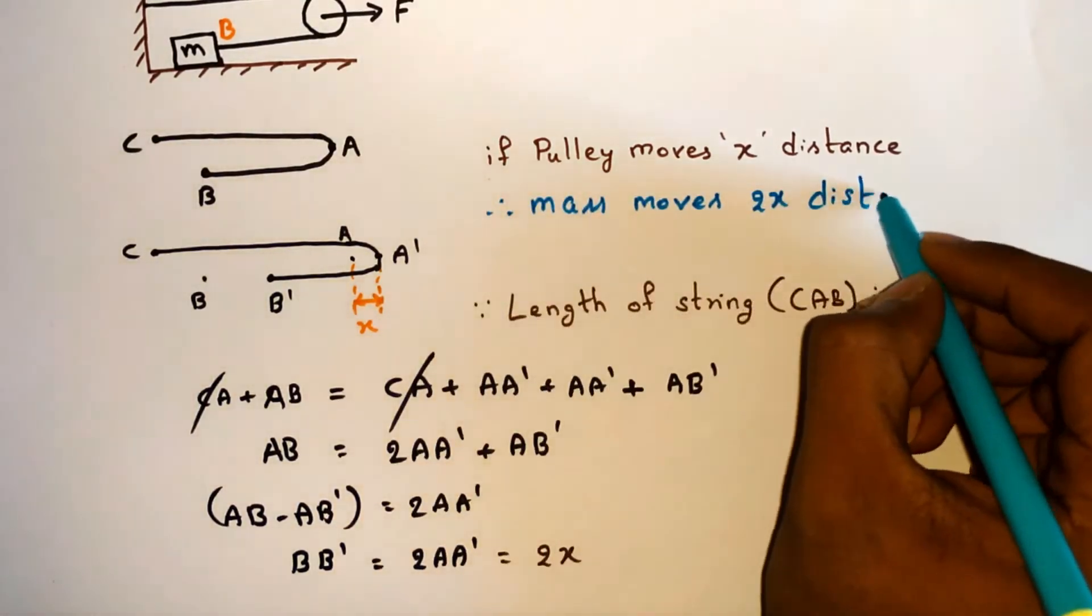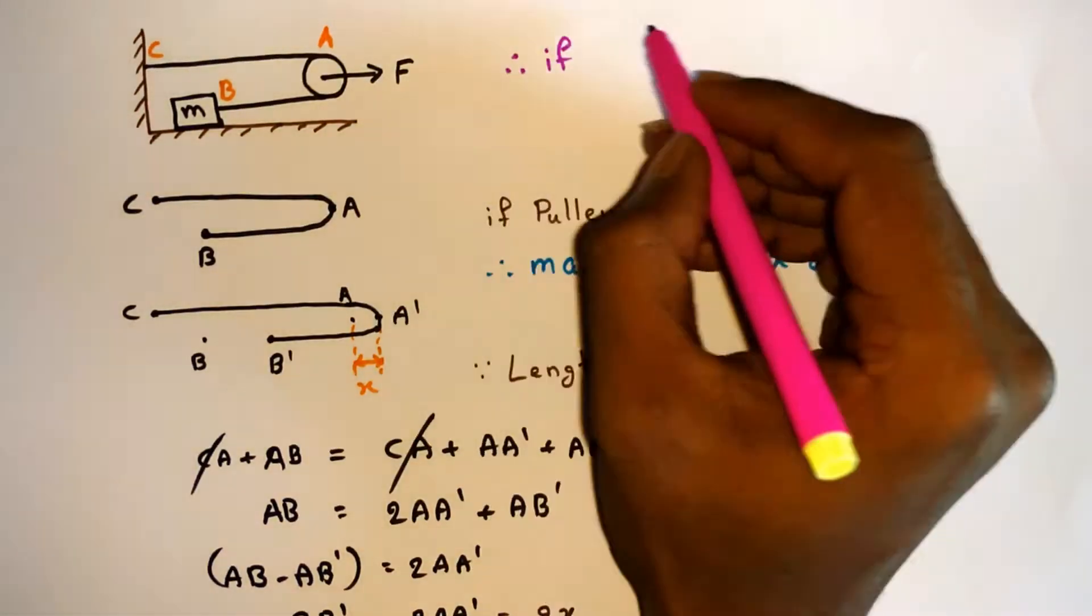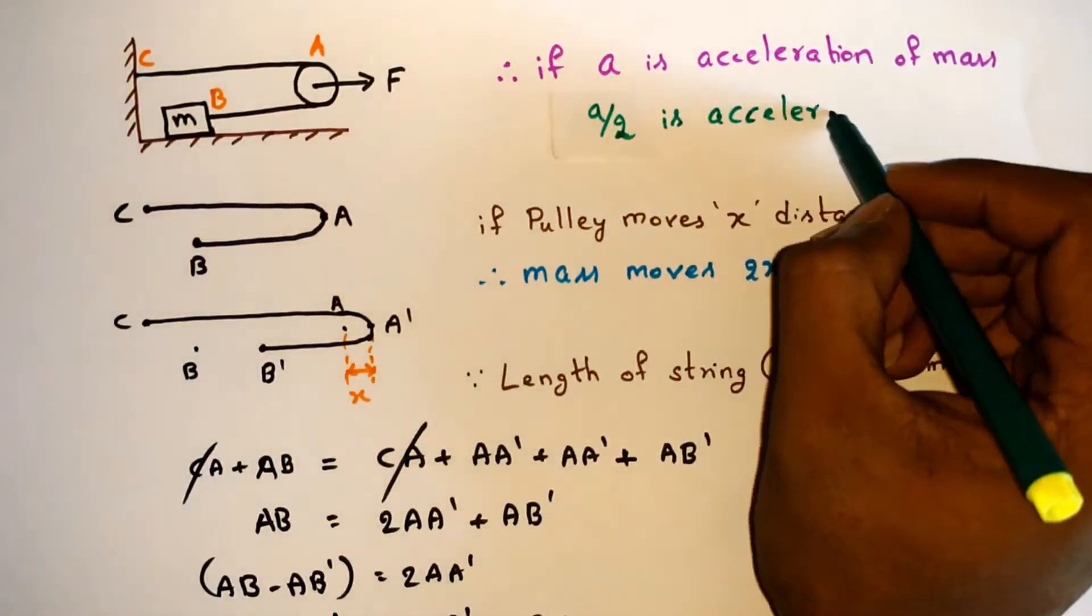So the mass m moves double the distance of pulley. Thus if a is the acceleration of mass m, then a/2 is the acceleration of pulley.